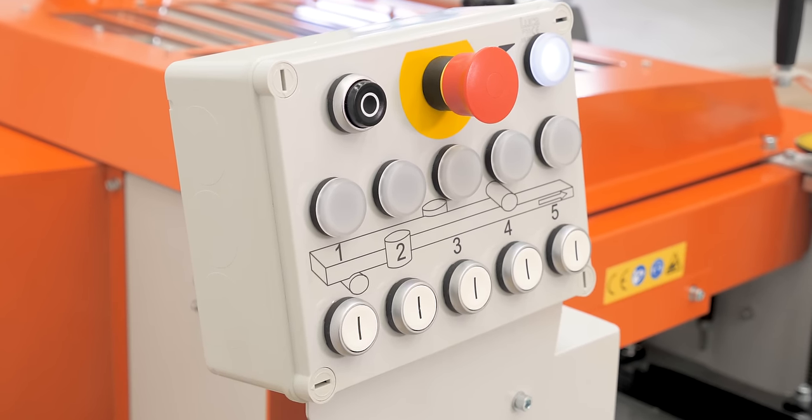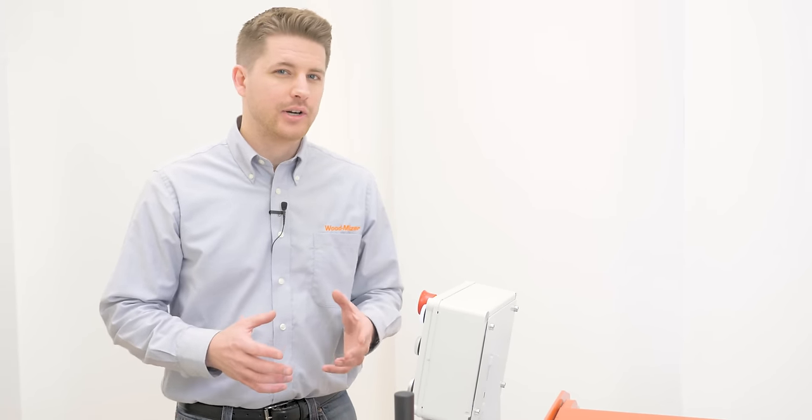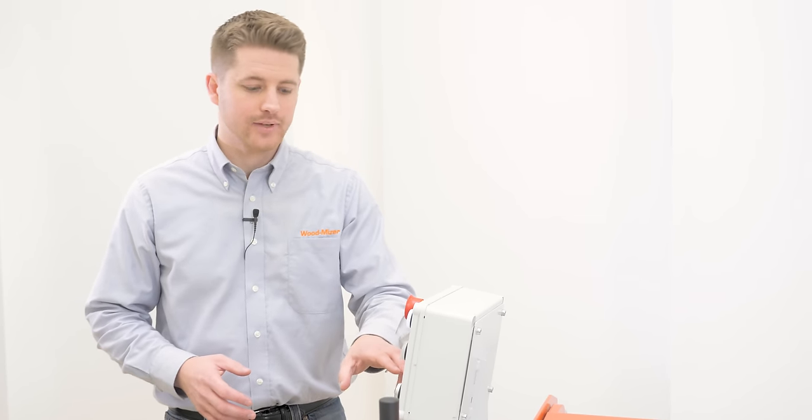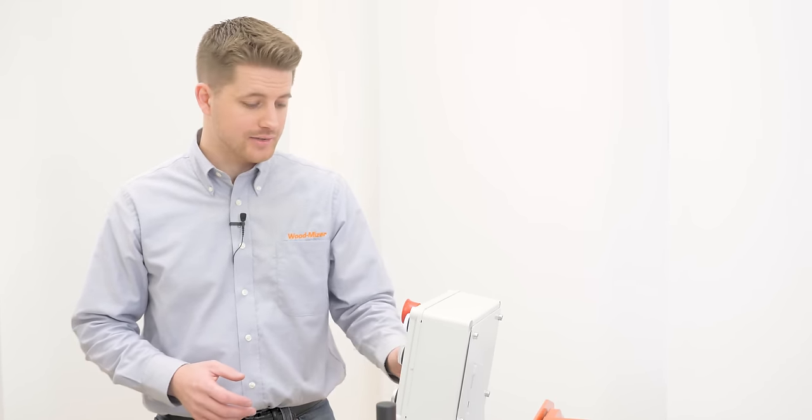At the control panel, you start and stop the cutter motors and power feed motor. Every cutter has its own dedicated motor, so you start each one individually, and then the power feed. Let's go ahead and turn them on.